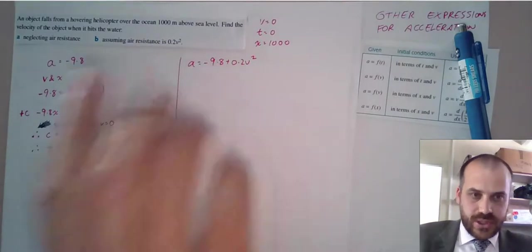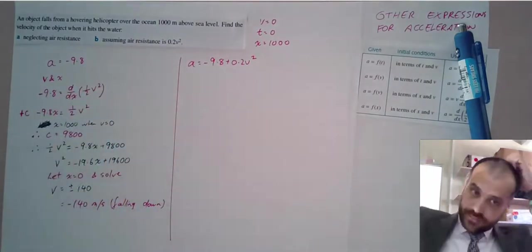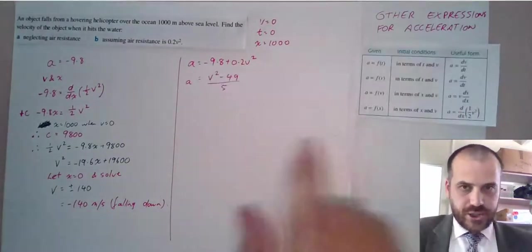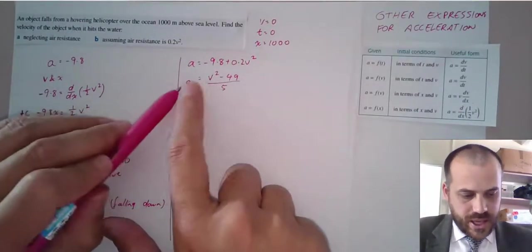So this 0.2 V squared is changing the acceleration. Now, I've had to make that positive because it's slowing the acceleration and the acceleration is negative. Now, we have this function in terms of V, A and V. So, A, F of V.